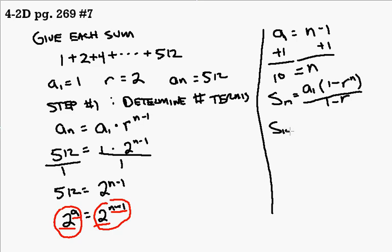So we're looking for the 10th partial sum. Our value of our first term is 1. We have 1 minus, our ratio is 2. n is 10 over 1 minus 2.